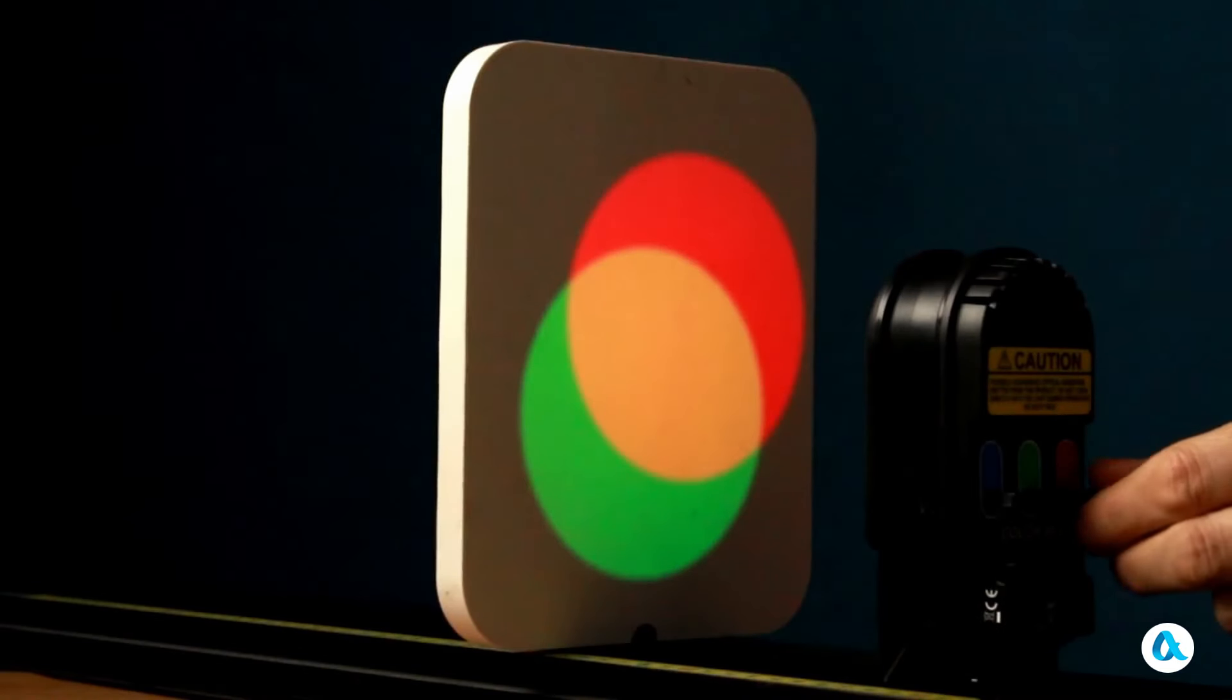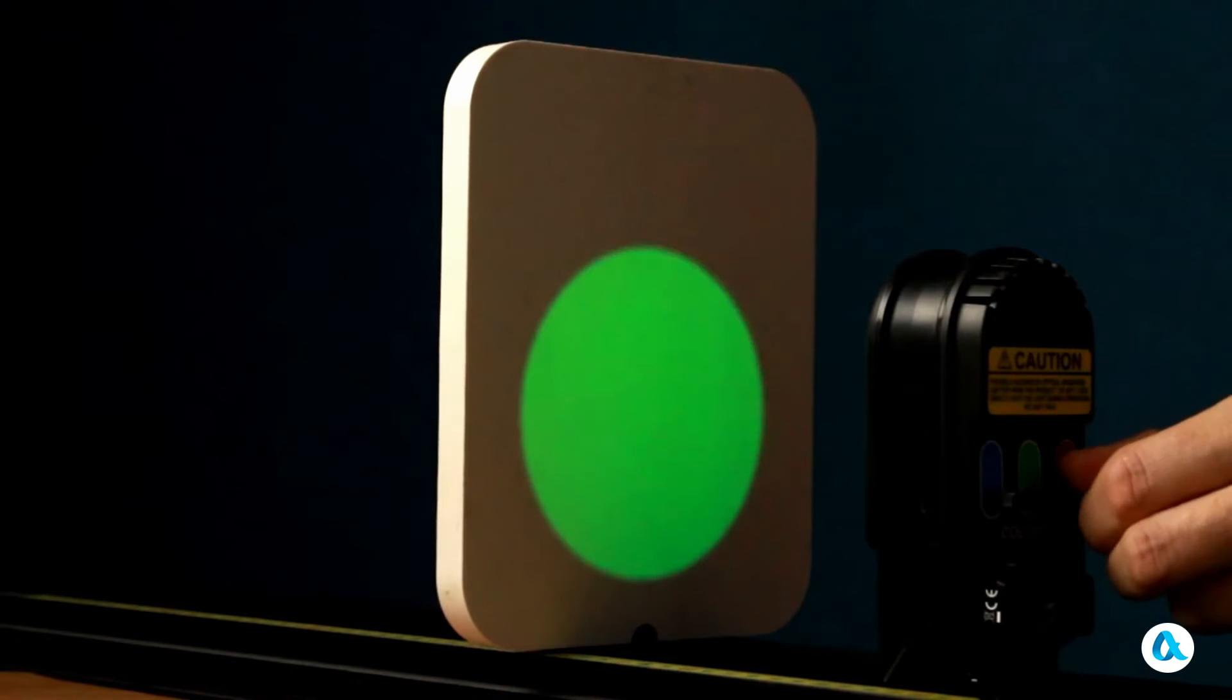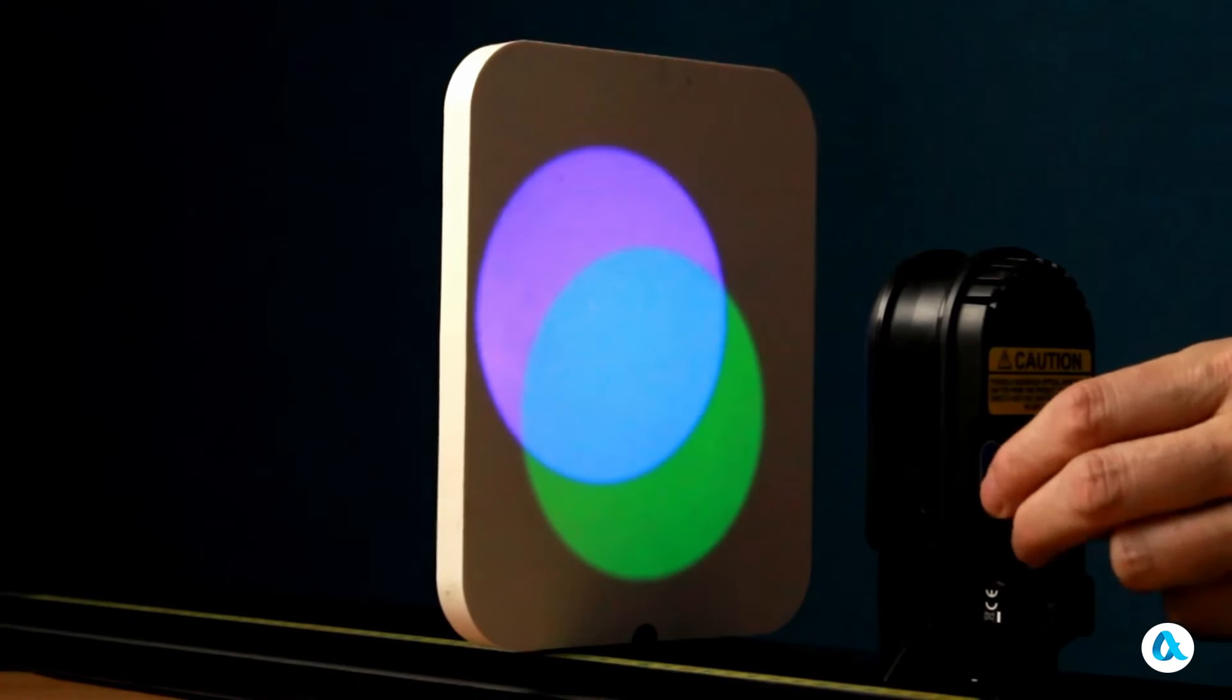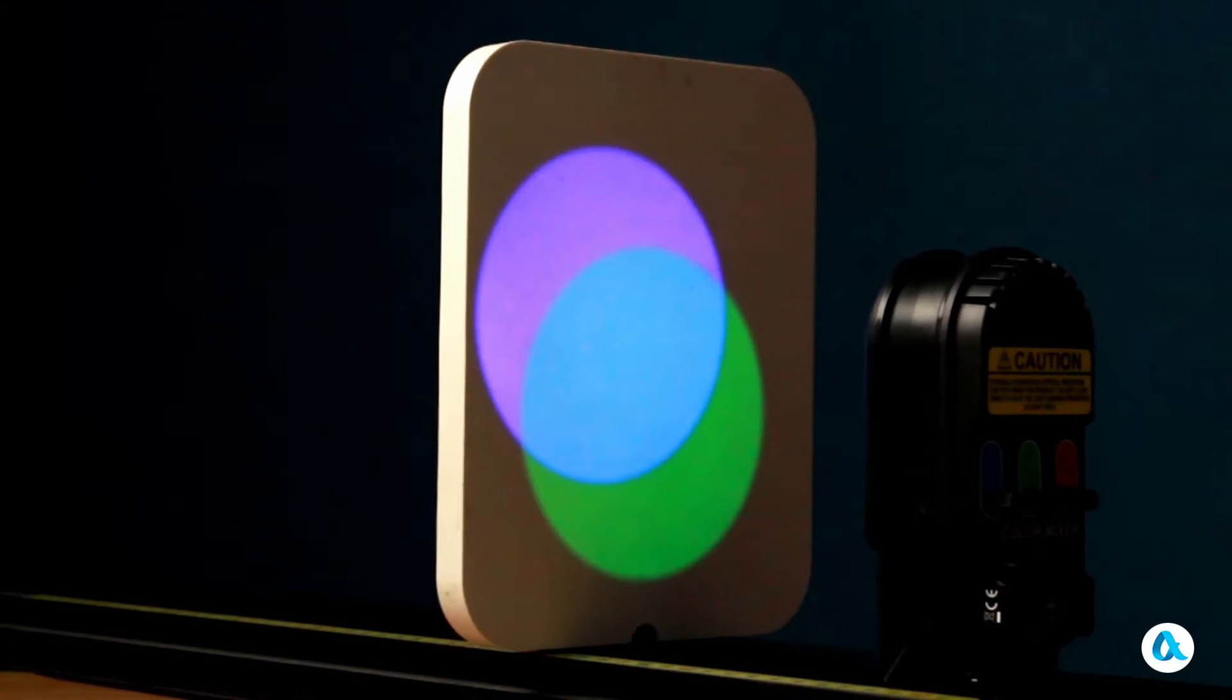Now, let us proceed to turn off the red LED. Additionally, we will proceed to turn on the blue LED. And at the intersection, we observe the blue color, which professionals commonly refer to as cyan.